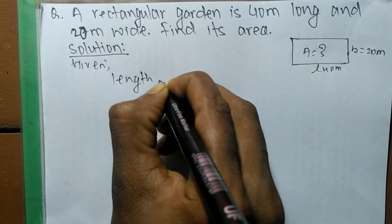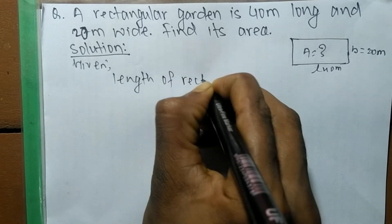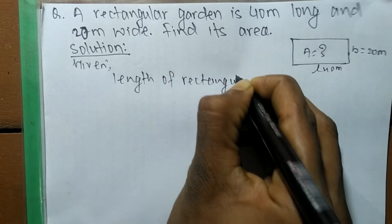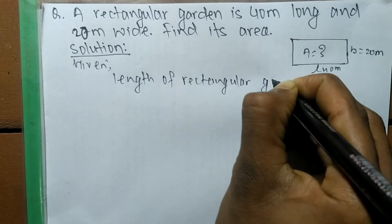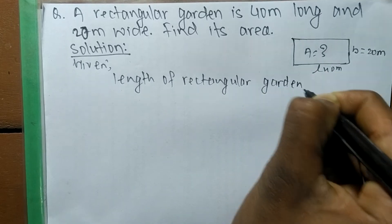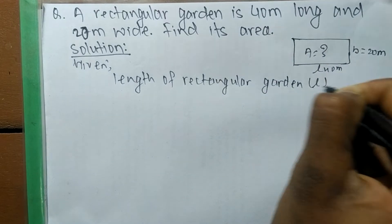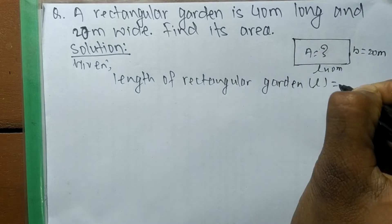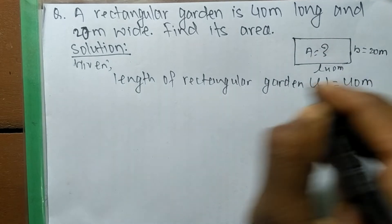We have given length of a rectangular garden, we denote it by L, so L is equal to 40 meter.